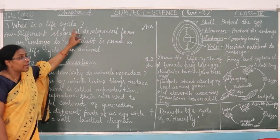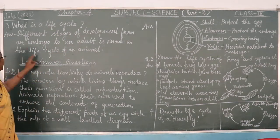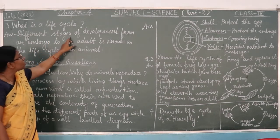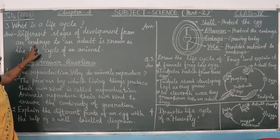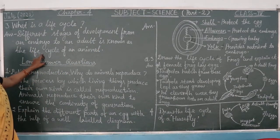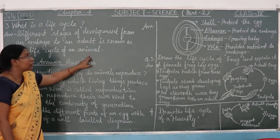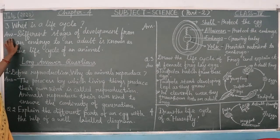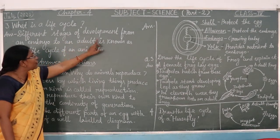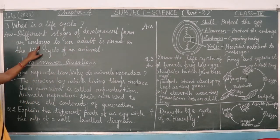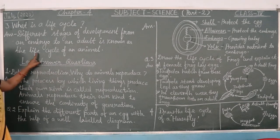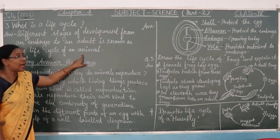Question: What is a life cycle? The answer is: the different stages of development from a young animal to an adult is known as the life cycle of an animal.